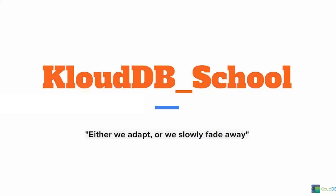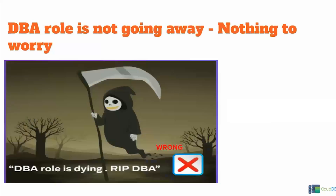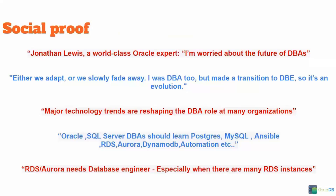Cloud DB School — either we adapt or we slowly fade away. So what's happening in the DBA space? The DBA role is evolving. The quote 'DBA role is dying' is wrong — the DBA role is not going away, there's nothing to worry about. Jonathan Lewis, a world-class Oracle expert, said: 'I'm worried about the future of DBAs — either we adapt or we slowly fade away.' One DBA noted: 'I was a DBA too, but made the transition to DBE. So it's an evolution.'